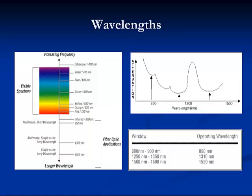There is significantly less attenuation loss at 1300 nanometers than at 850 nanometers. Specifically, multi-mode fiber operates at both 850 nanometers and 1300 nanometers, while single-mode fiber operates at 1310 nanometers and 1550 nanometers.